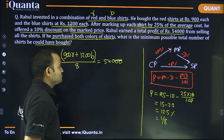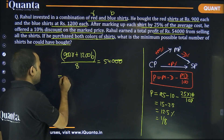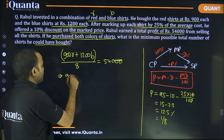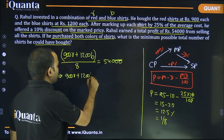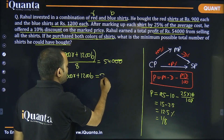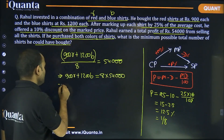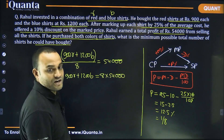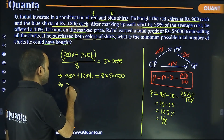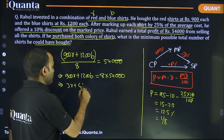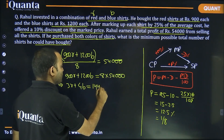So 12.5% of (900R + 1200B) = 54,000, which means 900R + 1200B = 8 × 54,000. Dividing both sides by 300, we get: 3R + 4B = 1440.